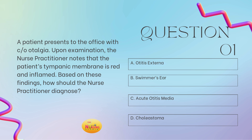Since the patient came in complaining of otalgia — these are the subjective findings, things they're stating is wrong — on exam, the nurse practitioner notes that the tympanic membrane is red and inflamed, so those are objective findings. This is a classic presentation for acute otitis media, remembering that the tympanic membrane — the middle of the ear — is red and inflamed, with otalgia, that pain in the ear. Otitis externa will have more of that tragus pain on the external portion of the ear, and swimmer's ear and otitis externa are the same thing.